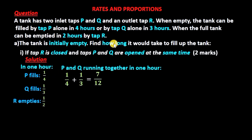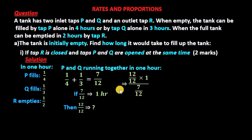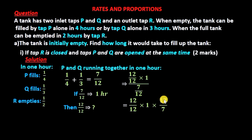We are asked how long it would take to fill the whole tank. If 7 over 12 is the fraction filled in one hour, then to fill the whole tank (12 over 12), we calculate 12 over 12 times 1 divided by 7 over 12, which equals 12 over 12 times 12 over 7. This gives us 1 and 5 over 7 hours.